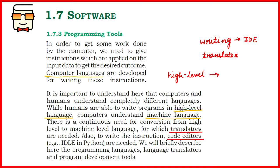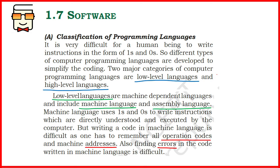There are programming languages easily understood by humans, including Java, C, C++, Python, Ruby, and so on. But these languages cannot be understood by the computer. The computer only understands binary digits — zeros and ones. So languages understood by humans are known as high-level languages, and the code understood by the computer is known as low-level language.